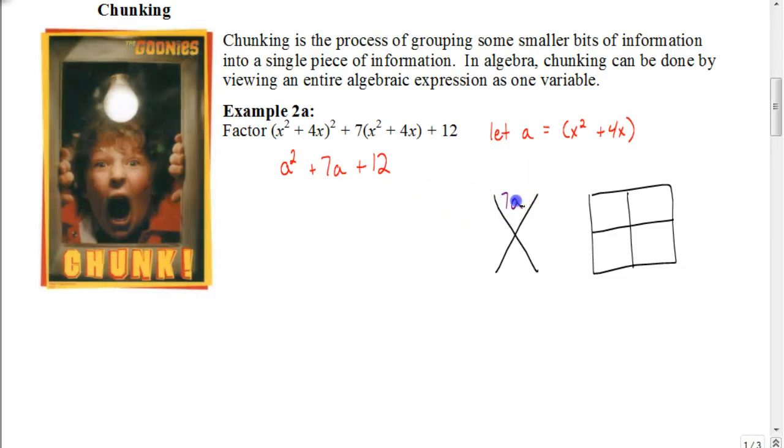We're going to put the 7a in the top part of the x. We're going to multiply a² times 12 to get 12a². Put that on the bottom part of the x. Put the a² over here and the 12 over here. Now you want to find two numbers that would multiply together to be 12a², same two that would add together to be 7a, which turns out to be 3a and 4a.